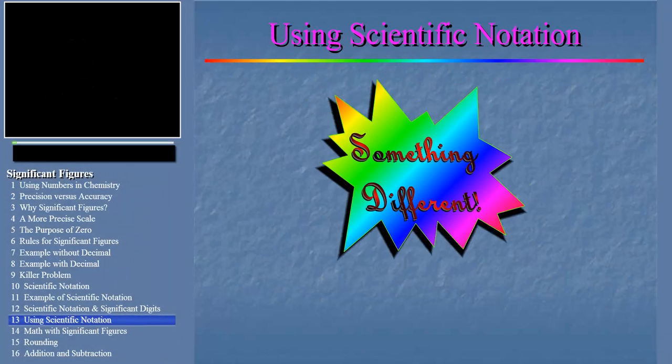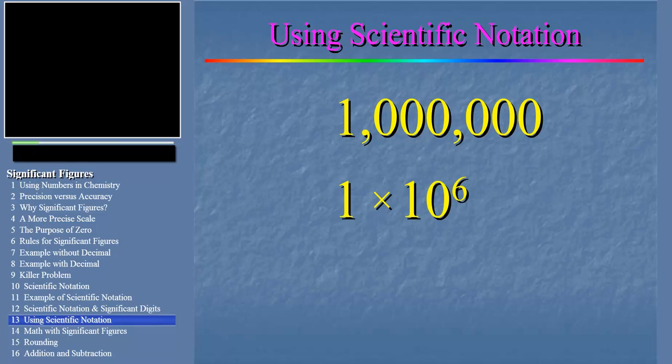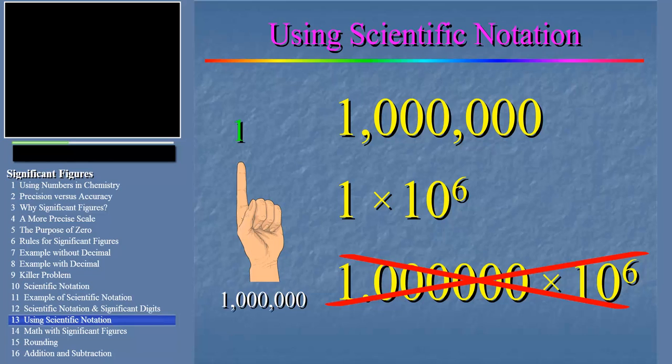And now for something completely different. How many significant figures does the number one million have? To help us find out, convert one million into scientific notation and count the number of digits. Take a moment and try it. Did you get one times ten to the sixth? Notice that we didn't keep the zeros when we moved the decimal place because they aren't significant. Counting the digits, we easily see that one million really has only one significant digit. The zeros in the original number are just placeholders. That's why it would be wrong to say that this number can be written as 1.000000 times ten to the sixth, because that would imply that the number has seven significant digits.